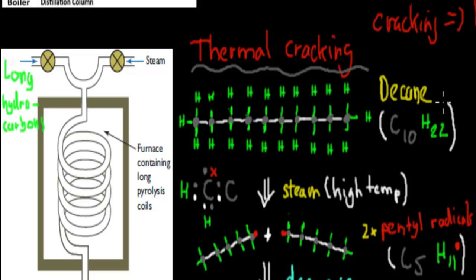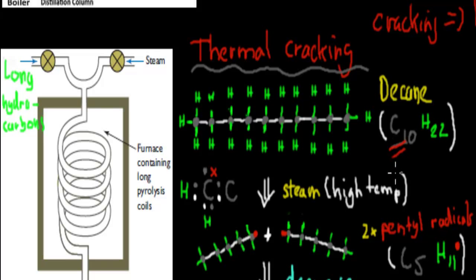So this is decane. Dec means 10, so it has 10 carbons in its chain. These brown dots are your carbons — 10 carbons with 22 hydrogens attached. So this is the structure of decane, C10H22. We want to have less than 10 carbons. So we want to have 8, or in the case of ethylene, if we want to produce ethylene we want to have C2H4 — so two carbons in its chain.